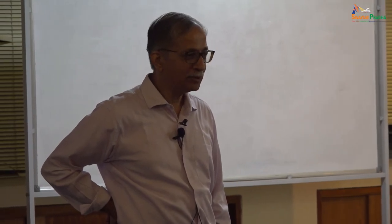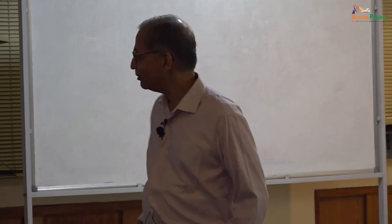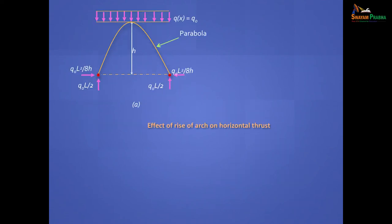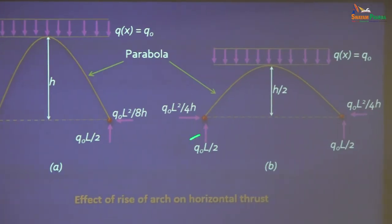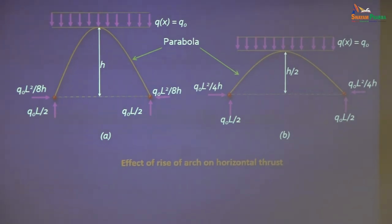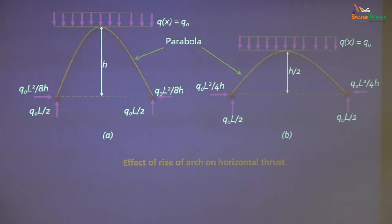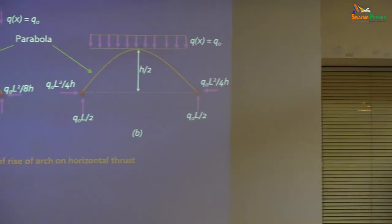But do you really need this hinge? Can we get rid of this hinge? Yes you can, because the shape is funicular — so you can get rid of this hinge whether you put it or not. This will also work — this is not needed for this loading. And do you need to make the bottom fixed? No. This shape is funicular for this loading and so all you need is to get a horizontal reaction — even if you make it fixed, you won't get any fixed moment here because there is no bending moment anywhere.